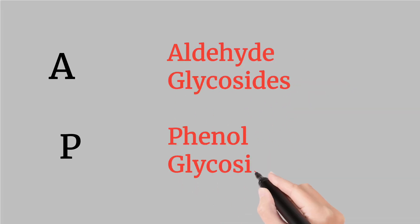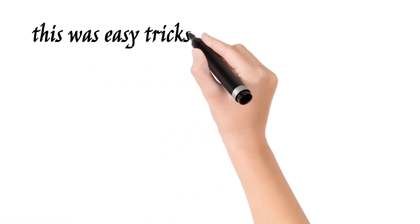A means aldehyde glycosides, and P means phenol glycosides. This was an easy trick.